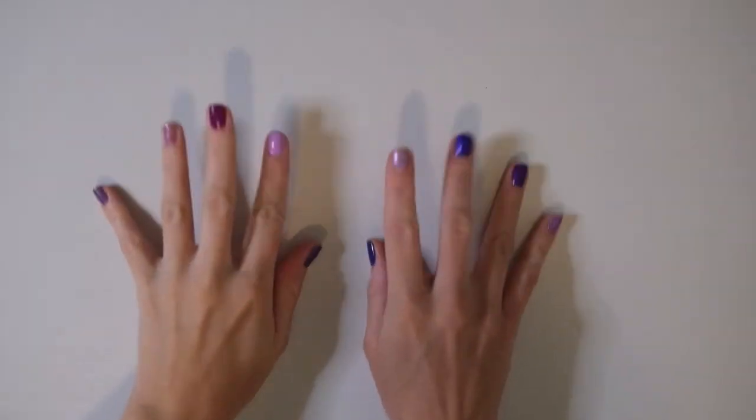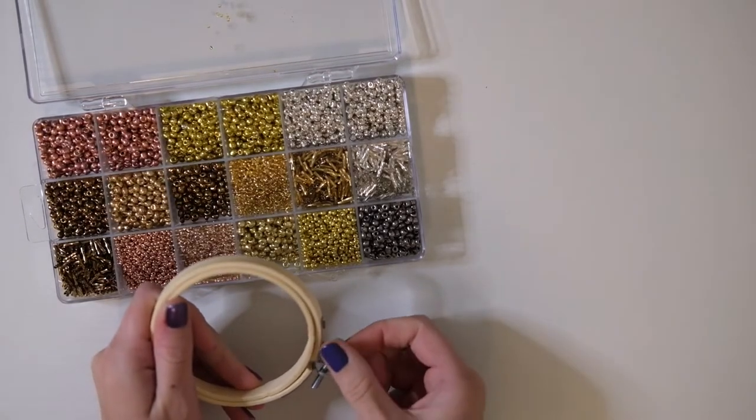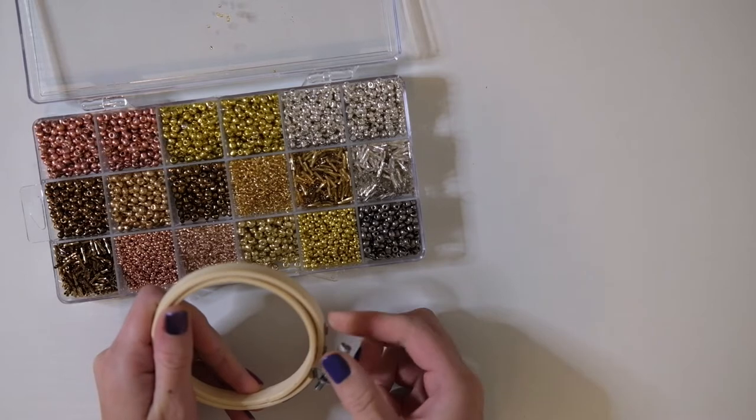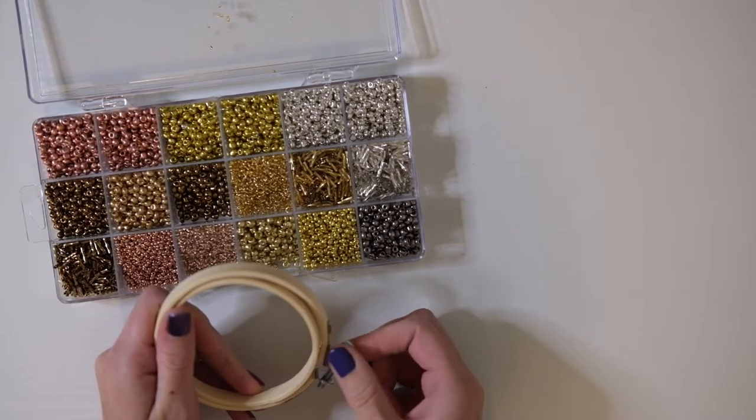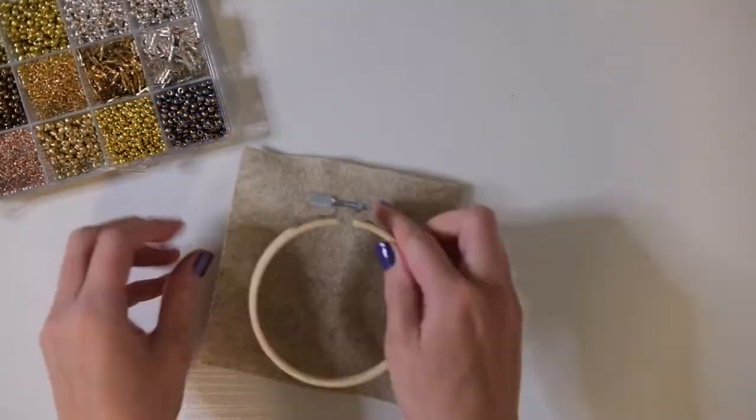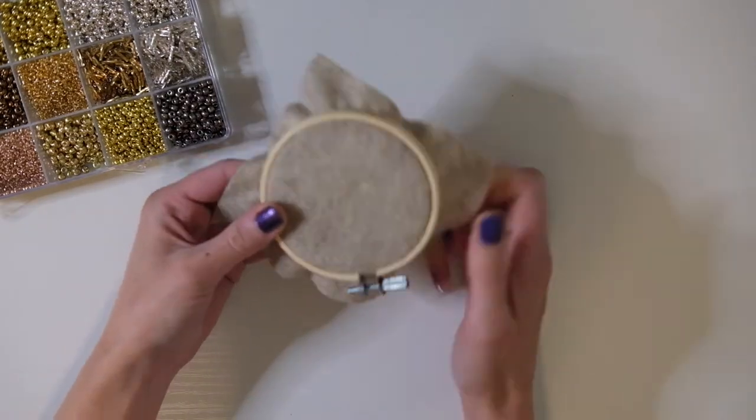Hey guys, welcome to another video. This week I'm going to be making some Halloween inspired bead embroidery. Getting started, I have my assortment of glass seed beads and this small embroidery hoop I'm going to be using. I'm using felt as the fabric to put in the embroidery hoop, and for this first one I'm going to be using this sand color.